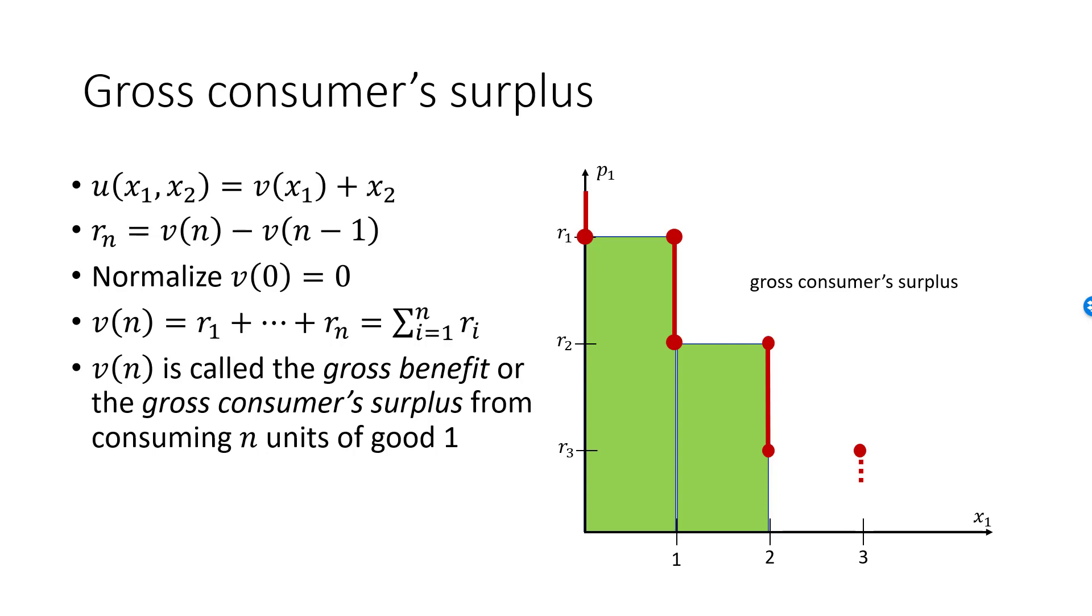Starting from a very high price and reducing it, r1 is the price where the consumer would shift from 0 to 1 units of good 1. r1 is therefore a good measure of how much she values the first good. Similarly, r2 is a good measure of how much she values a second unit of good 1. By adding reservation prices, we end up with a reasonable measure of her benefits from consuming n units of this good.